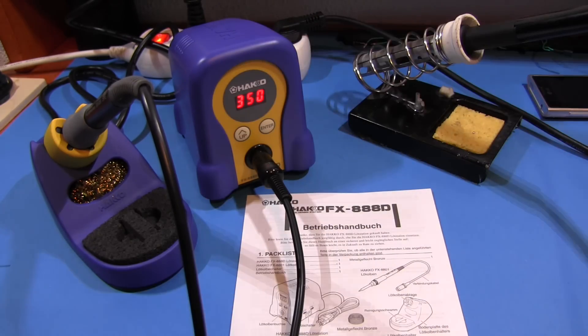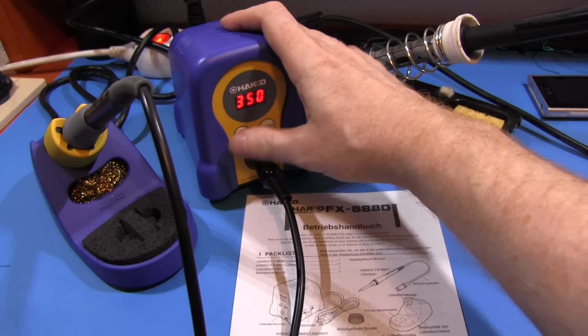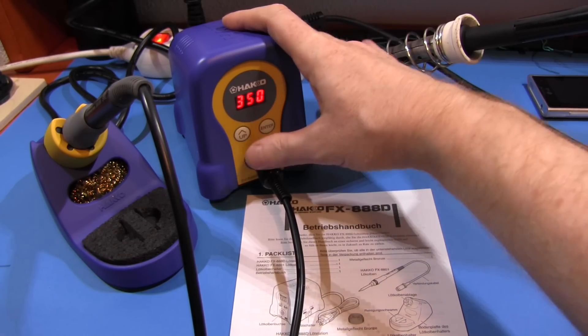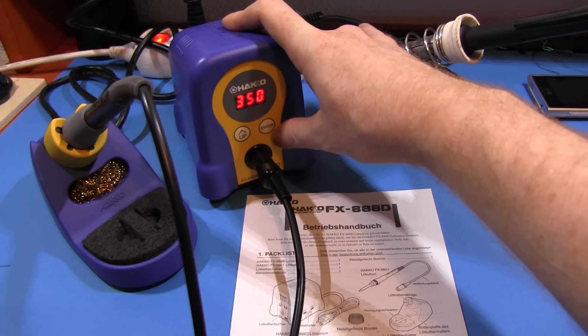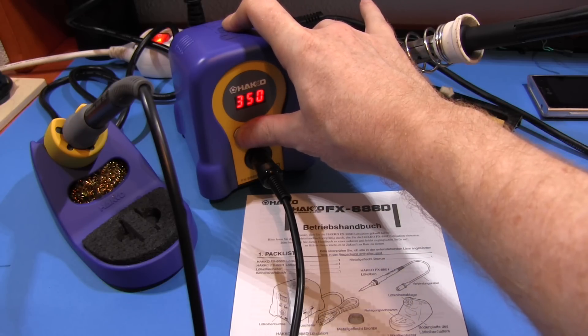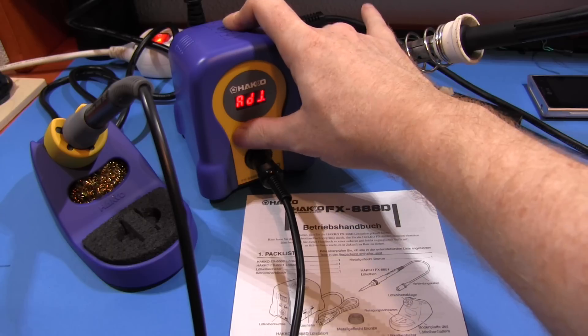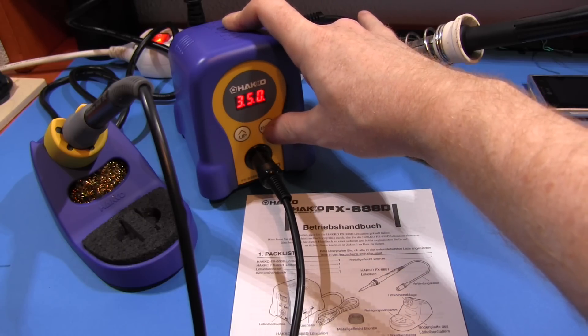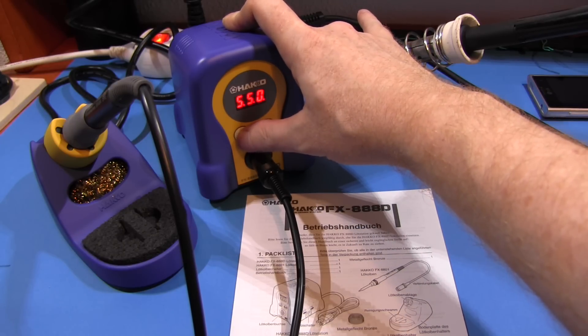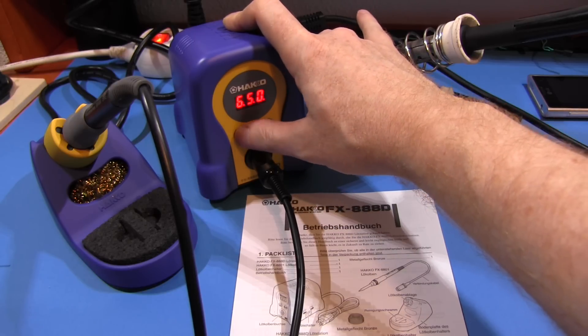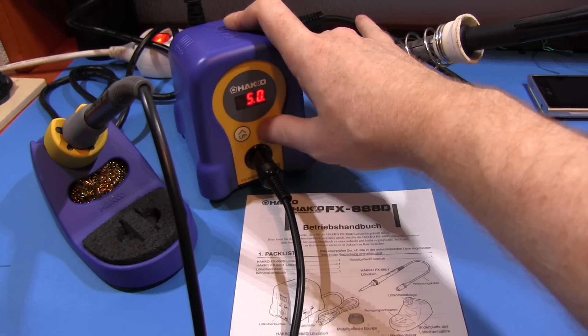I'm going to see if I can figure out the user interface without reading the manual. How do we change the temperature? Press the up button. Nope, nothing happening. Press the enter button. Nope. Press and hold the up button. Ooh, something happened. Press that one. Hey! Flashing digits. That's good. Three, four. Four hundred and fifty degrees. Five hundred and fifty degrees. Wow, you can solder huge things with that. Six hundred and fifty. Whoa! Back to zero. One hundred and fifty. Two hundred and fifty. Let's put it three hundred and fifty. How do I enter that?